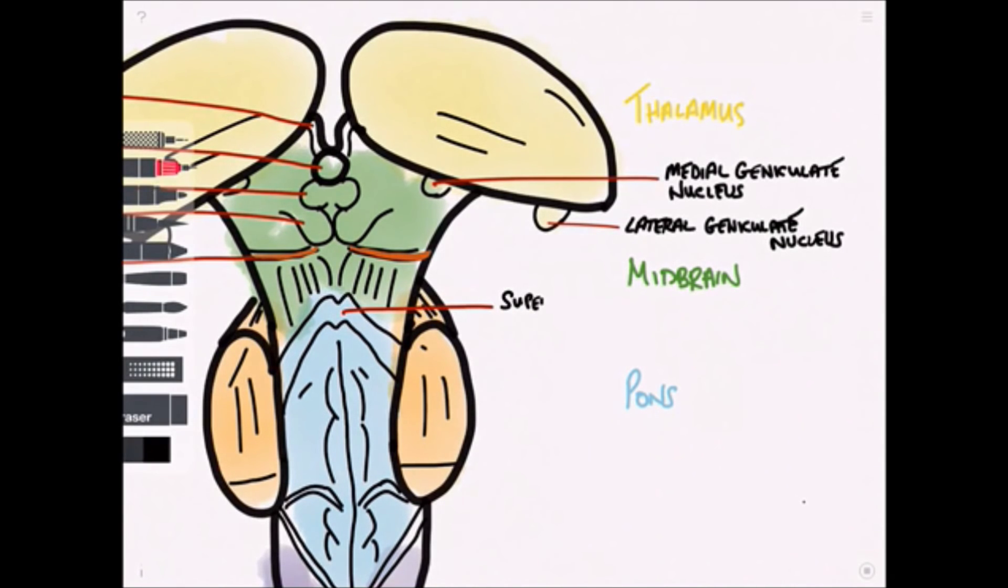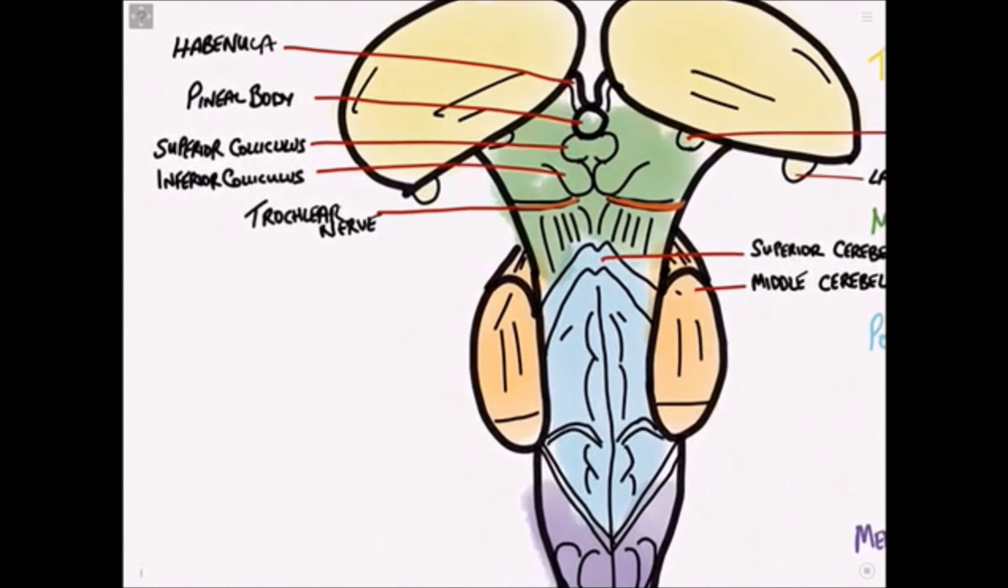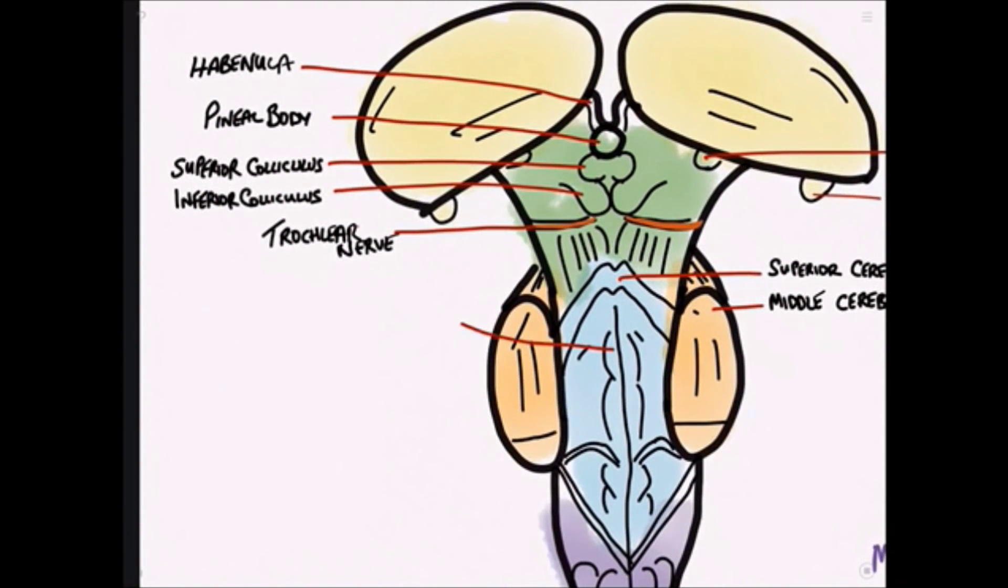This is the superior cerebellar peduncle and of course there's the middle cerebellar peduncle. If we come back over to the other side then we can label this is the medial eminence and this structure is the facial colliculus.